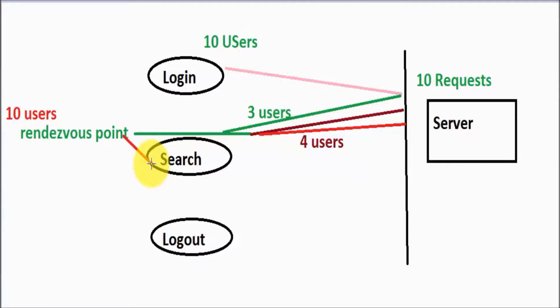In this kind of scenario, when we want multiple users to perform the same task simultaneously, we use the Rendezvous point. We add the Rendezvous point while creating the scripts in the Virtual User Generator, but the number of users and rest of the settings are configured when we are working in the Controller, because in Virtual User Generator we cannot apply multiple users.